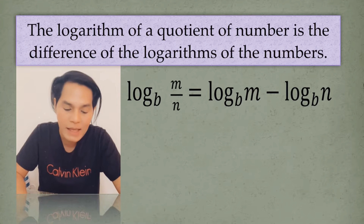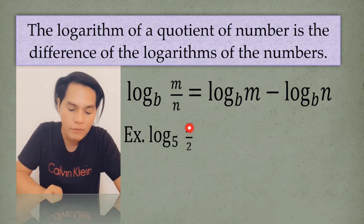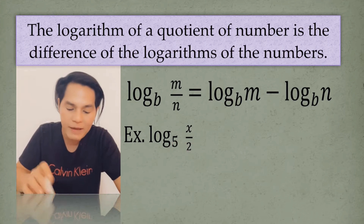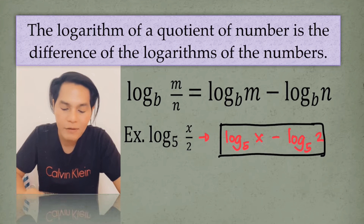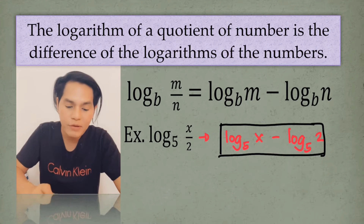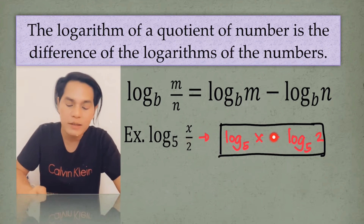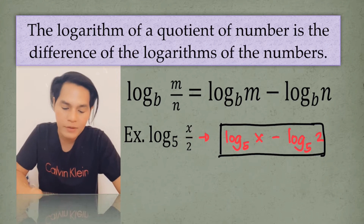In order to understand this, let's have an example. I have here the log of x over 2, divided by 2, to the base 5. That is equal to the log of x to the base 5 minus the log of 2 to the base 5. Because it's a quotient, we subtract the logarithm of the numerator by the logarithm of the denominator.